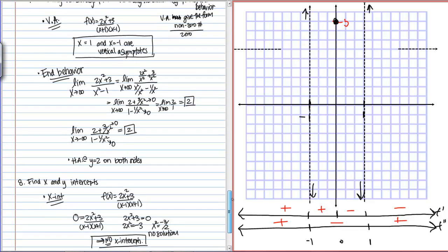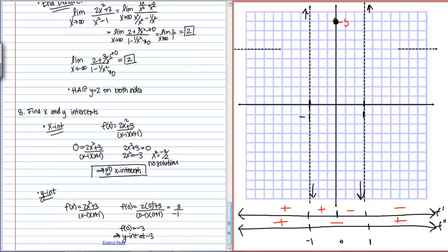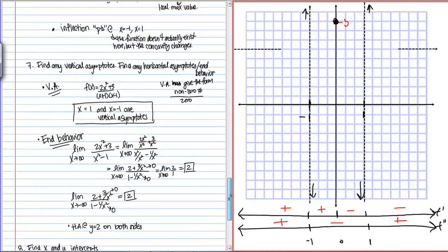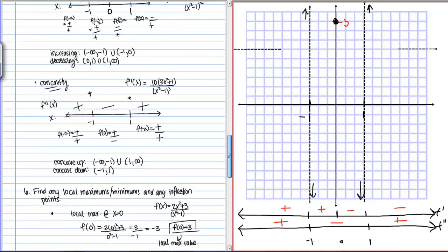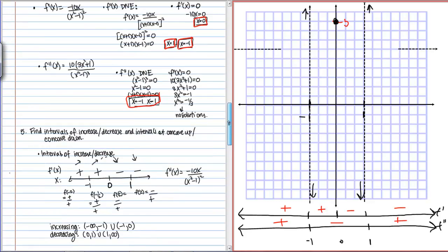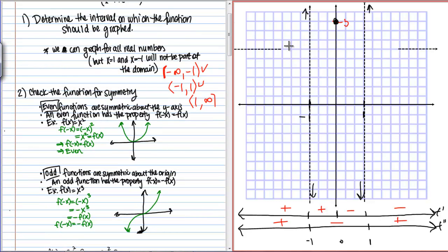We also have some points to plot. We know there are no x-intercepts, but we have a Y-intercept at negative 3 — that's the point we've already plotted. Those are all our points and asymptotes, giving us all the information about the height of the graph — the Y values, how far up and down to place the function.